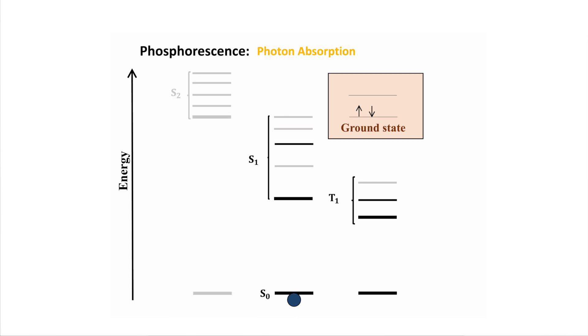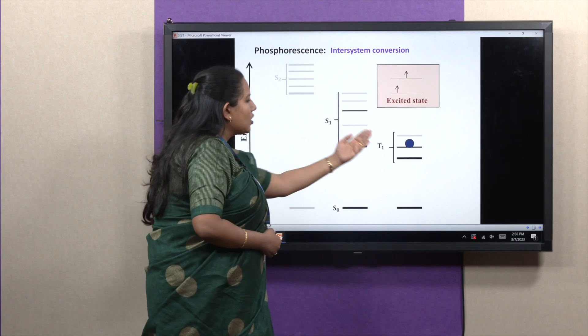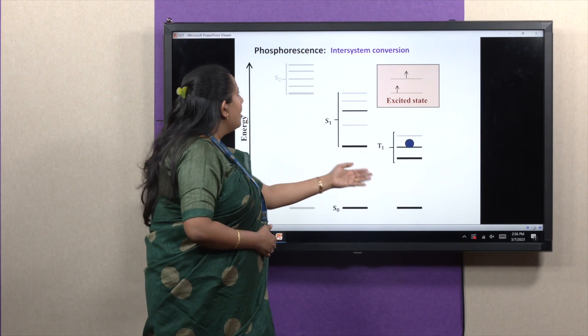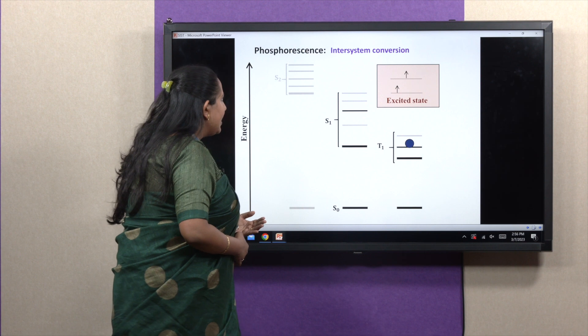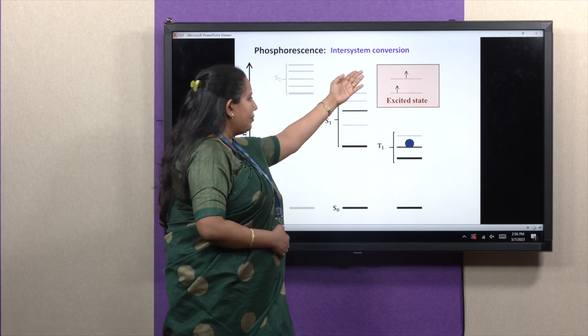Whereas, similarly, after this photon absorption, if molecule goes to higher excited state, and from this singlet higher excited state by vibrational relaxation, it is coming to the lowest vibrational level of the first singlet state. From this state, if it goes to triplet state by a non-radiative decay channel called inter-system crossing,